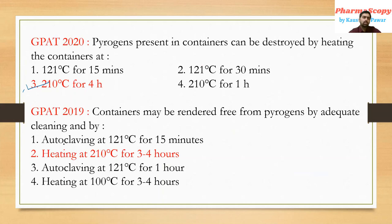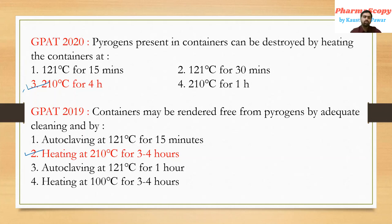Similarly in GPAT 2019, the question was: 'Containers may be rendered free from pyrogens by adequate cleaning and by?' — the correct answer is heating at 210 degrees Celsius for 3 to 4 hours. Both GPAT 2019 and 2020 asked about depyrogenation in an applied, practical form rather than asking directly for the temperature and time, so you must remember the basic concept to solve such twisted questions.